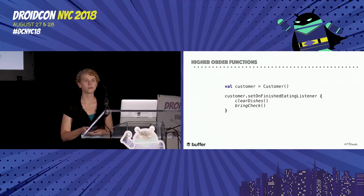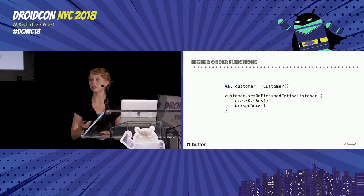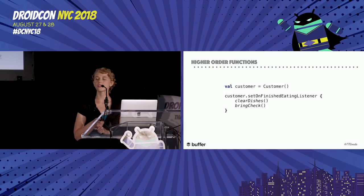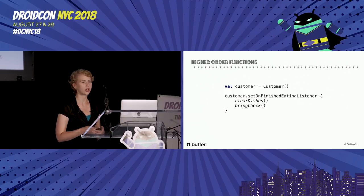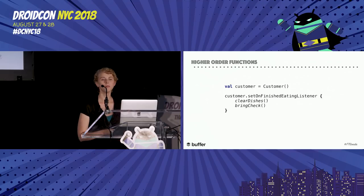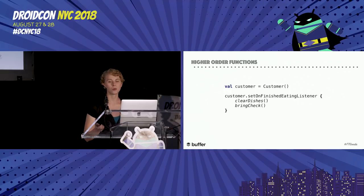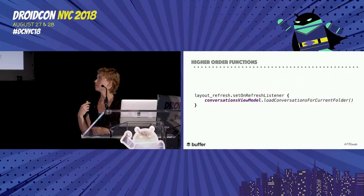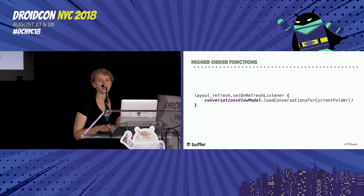Now another common case for using a higher order function: replacing a single-function interface often containing logic to respond to an event, such as a button click or something emitted in an RxJava stream. We have a listener for when the customer is done eating so we can clear the dishes and bring the check. We could pass in an object with a single function containing the logic, or take the much cleaner option and pass in a lambda. Here we're setting our onFinishedEating listener. And a real-life example: setting an onRefreshListener and then reloading conversations in there.